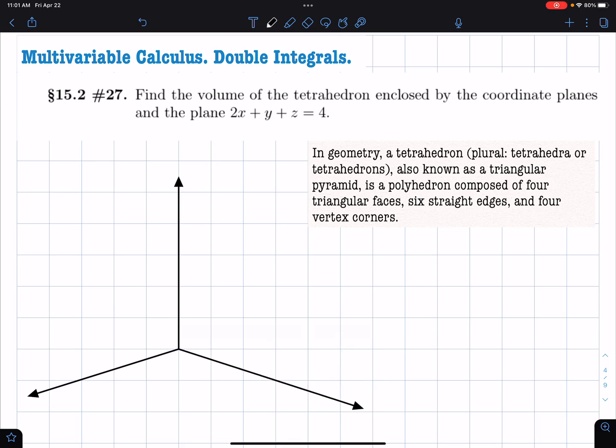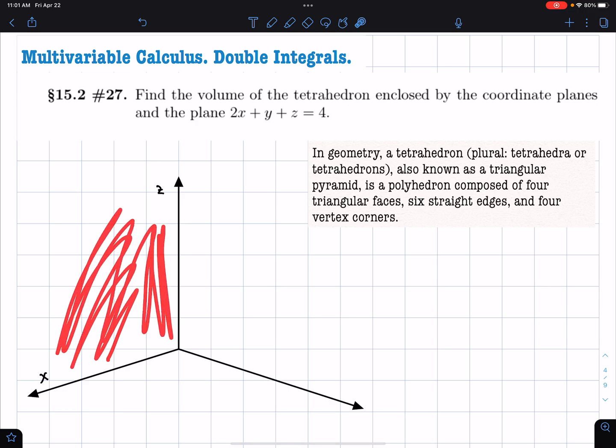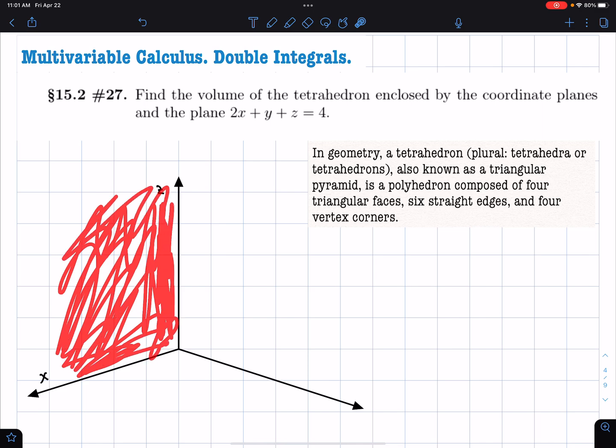So what we mean by enclosed by the coordinate planes is that we have one plane x, z, which is going to be one of the faces of our tetrahedron.